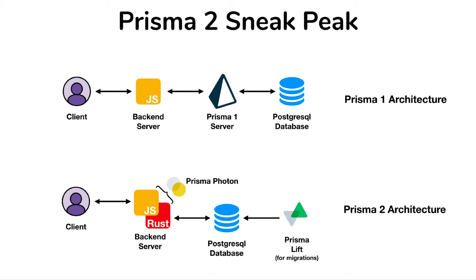As you updated your schema file, Prisma would take that and apply it as a migration to your database. You could just have one location where your entire schema is defined and it would apply that automatically when you started up the Prisma server. The downside to Prisma 1 is that you needed to maintain two different servers — one was the Prisma server and the other was your backend server.